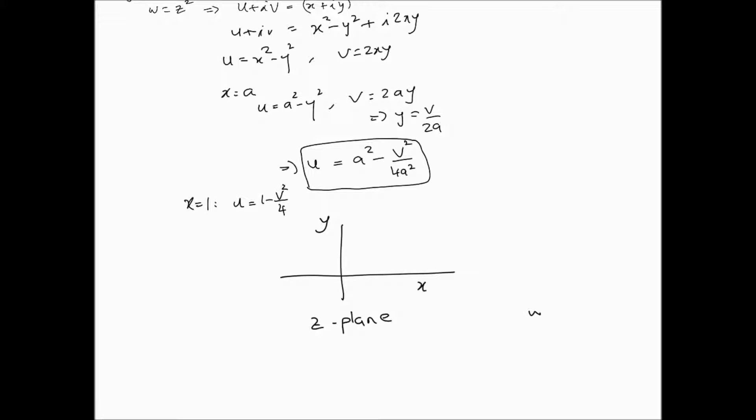So, here we have the x and the y, which is the z-plane. This is the z-plane. And here we have the w-plane. And the w-plane is as follows. It's v and u. So, this is the u and the v. They're the real axis and the imaginary one. Because it's u plus iv.